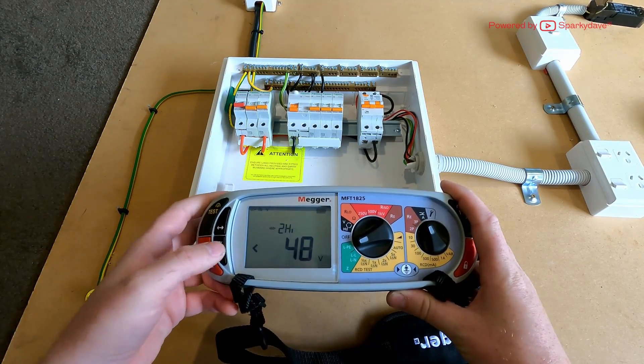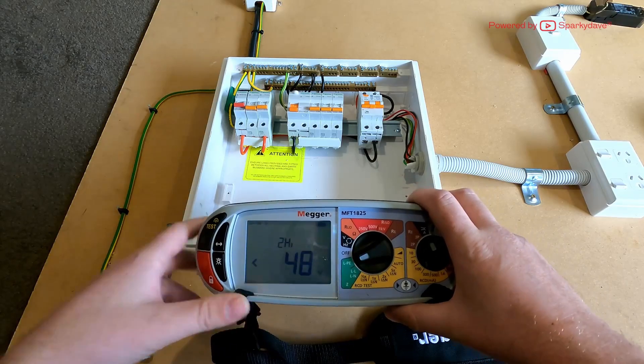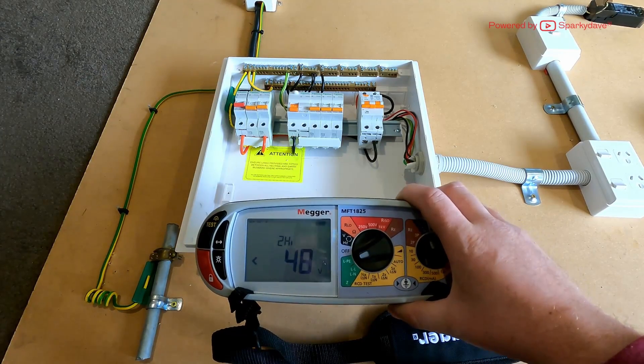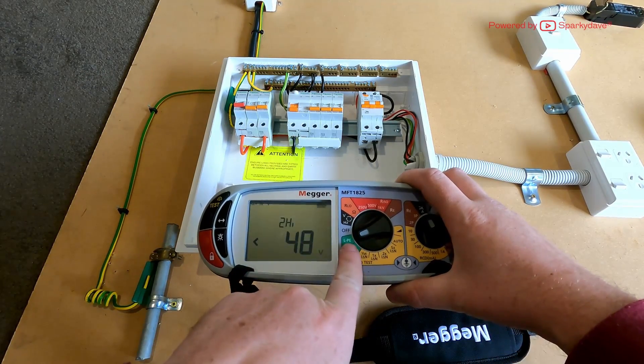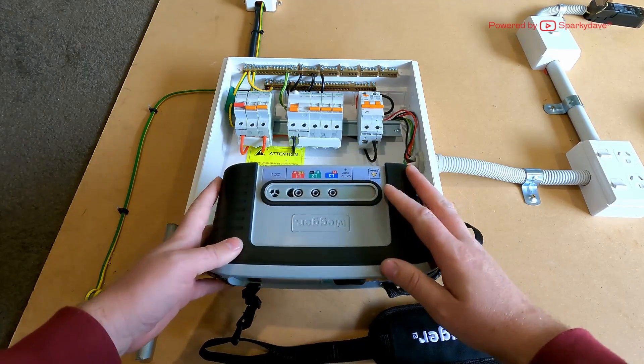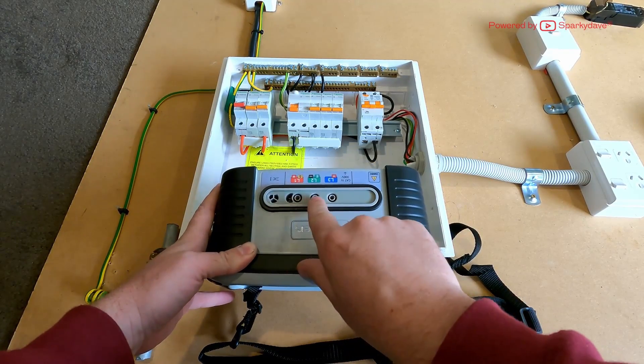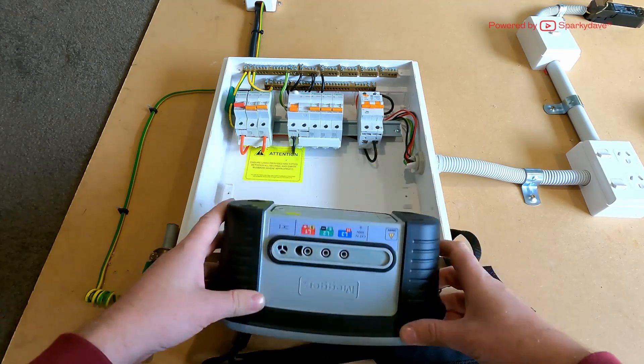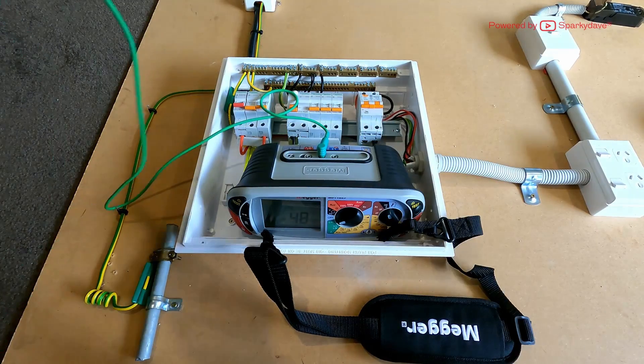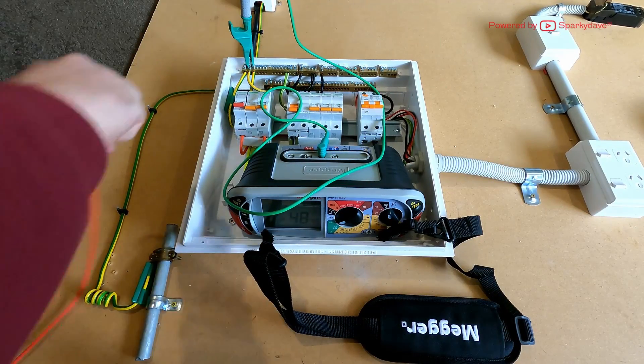Our first test here will be our two lead high current test, and we're going to go on the line side of the main switch. We've got it on line to earth. What we're going to want is to put one into the line and one into the earth. Here goes our earth lead, we'll hook this one onto the earth bar, throw our red lead in.